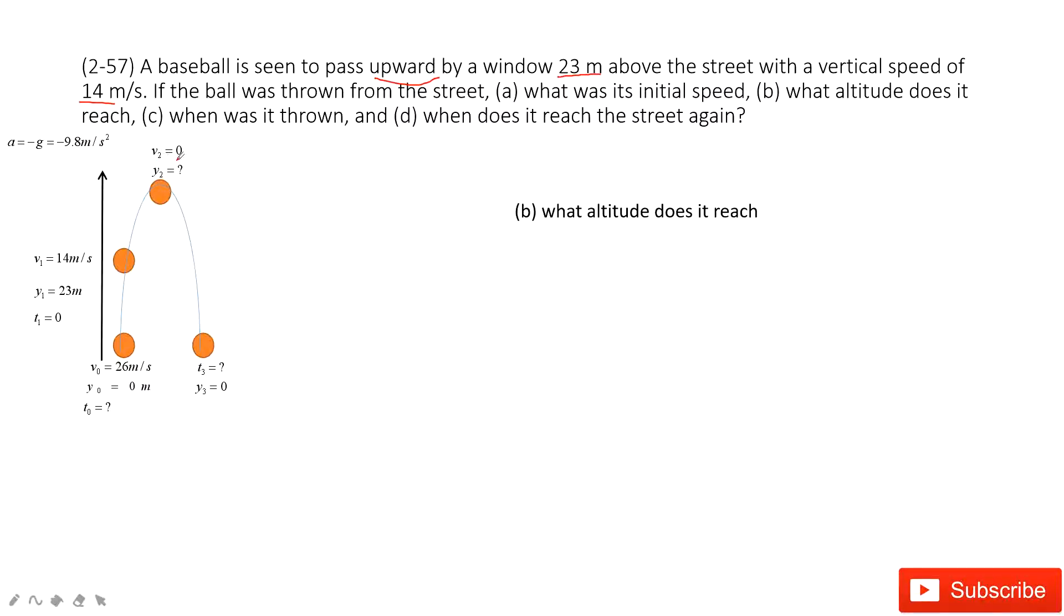So for y2, we know at the peak, velocity must be 0. So in this one, we can know we know the initial velocity. And we know the peak velocity. And we know the velocity at the window. We know the peak velocity. We know the position y1. We know y2. And we also know acceleration. So it's easy.